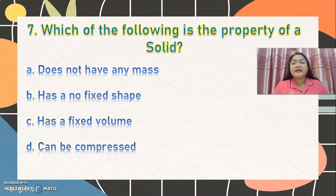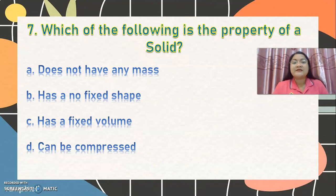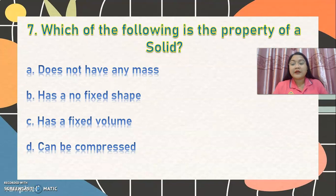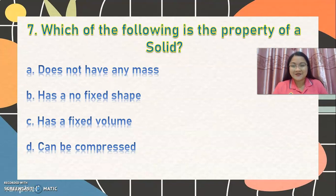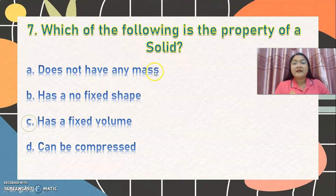Number 7: which is the property of a solid? Letter A, does not have any mass. Letter B, has no fixed shape. Letter C, has a fixed volume. Or letter D, can be compressed. The correct answer is letter C. Remember, both liquid and solid have a fixed volume.